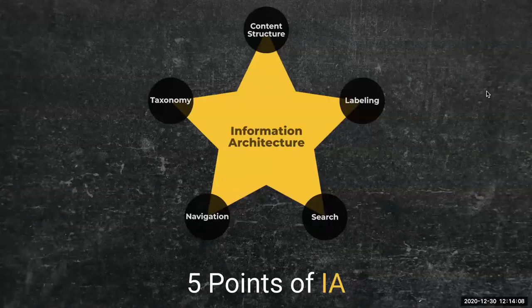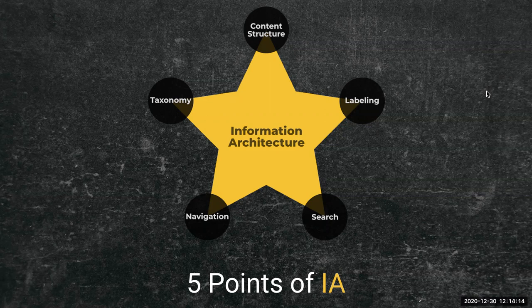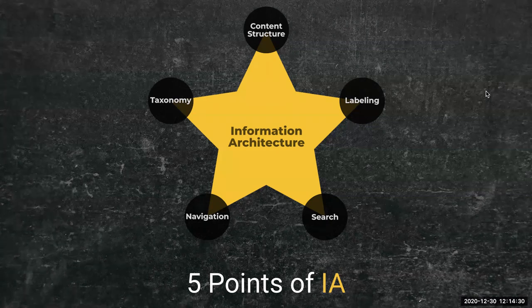There are five key points of Information Architecture: Content structure — how data points are defined with fields and relationships. Taxonomy — the way we classify things. Labeling — the words that we choose to use. Navigation — how we move throughout a system. And search — how we use some sort of search facility to find something very specific.